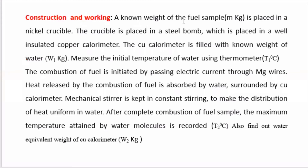Working: a known weight of fuel sample m kg is placed in a nickel or steel crucible. The crucible is placed in a steel bomb inside a well-insulated copper calorimeter filled with a known weight of water W1 kg. The initial temperature of water T1 is measured using the thermometer. Combustion is initiated by passing electric current through the magnesium wires. Heat released by combustion is absorbed by the surrounding water; a mechanical stirrer ensures uniform heat distribution. After complete combustion, the maximum temperature attained by water, T2 degrees centigrade, is recorded.